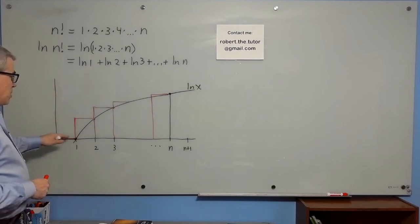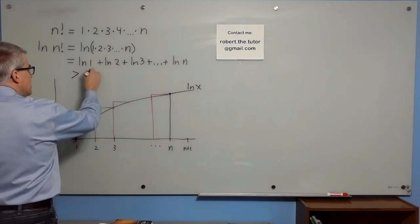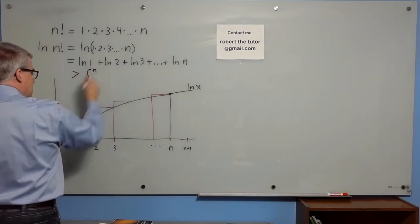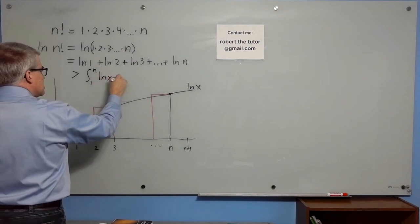And the boxes are an overestimate. So this is greater than the integral from 1 to n natural log x dx.